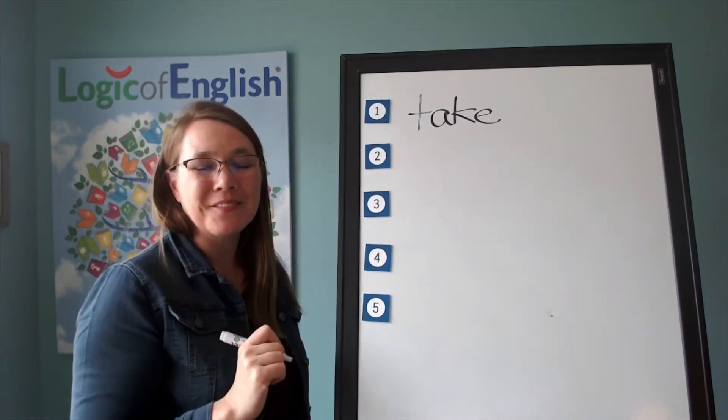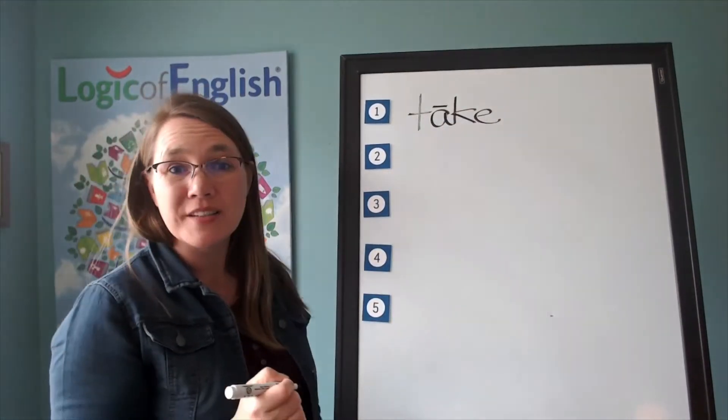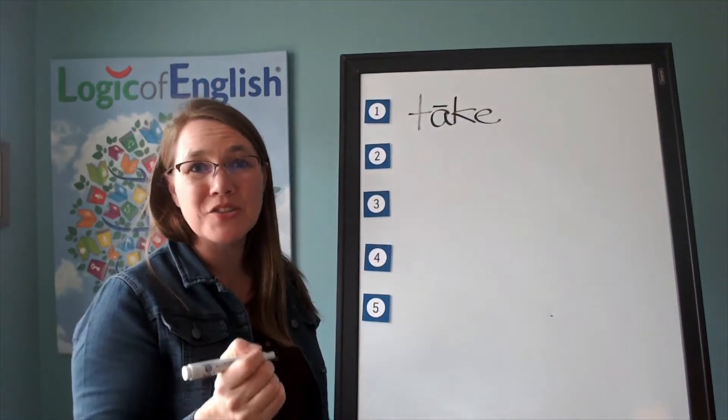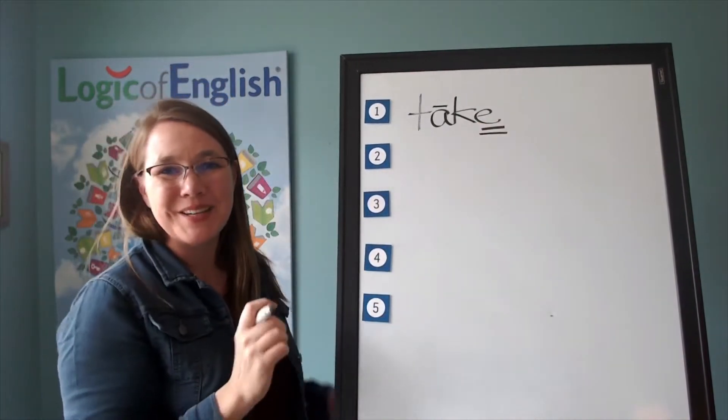Why do we have a silent final E in take? You're right. It makes the vowel say its long sound. So we'll put a line over it to show that it's saying its long sound and we'll underline the silent final E twice.